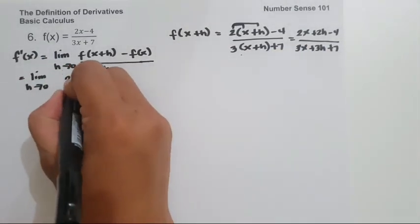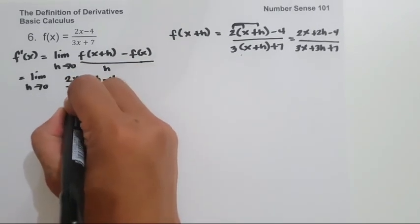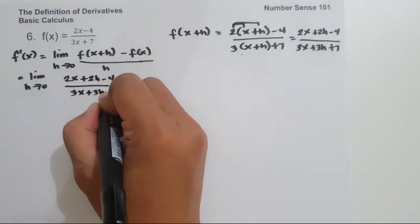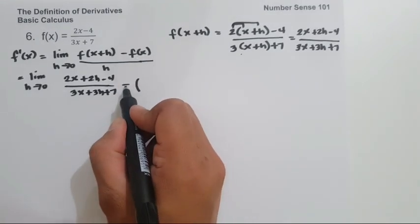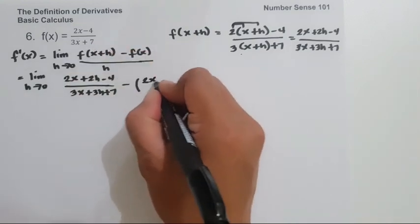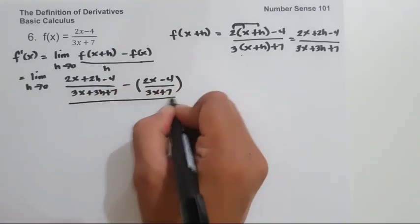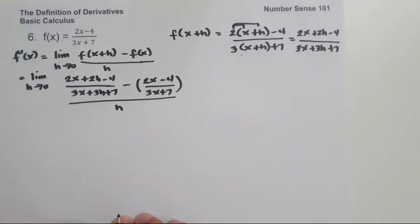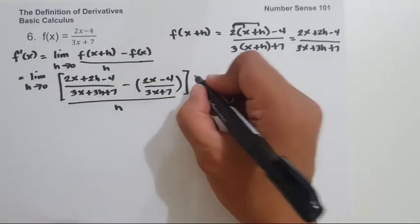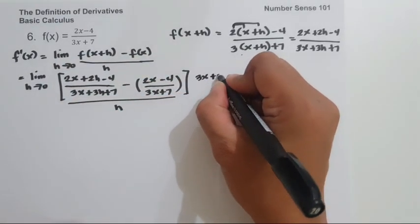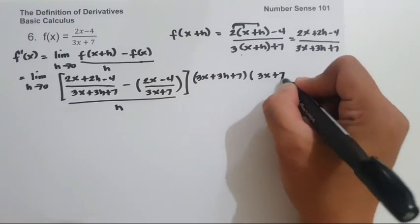So we have limit as h approaches zero of: (2x plus 2h minus 4) all over (3x plus 3h plus 7), minus (2x minus 4) all over (3x plus 7), all over h. To simplify, we multiply the numerator by the product of the two denominators: (3x plus 3h plus 7) and (3x plus 7).